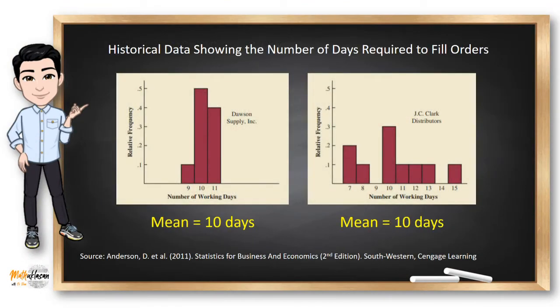Suppose that you are a purchasing agent for a large manufacturing firm and that you regularly place orders with two different suppliers. After several months of operation, you find that the mean number of days required to fill the orders is 10 days for both of the suppliers. Although the mean number of days is 10 for both suppliers, do the two suppliers demonstrate the same degree of reliability in terms of making deliveries on schedule?